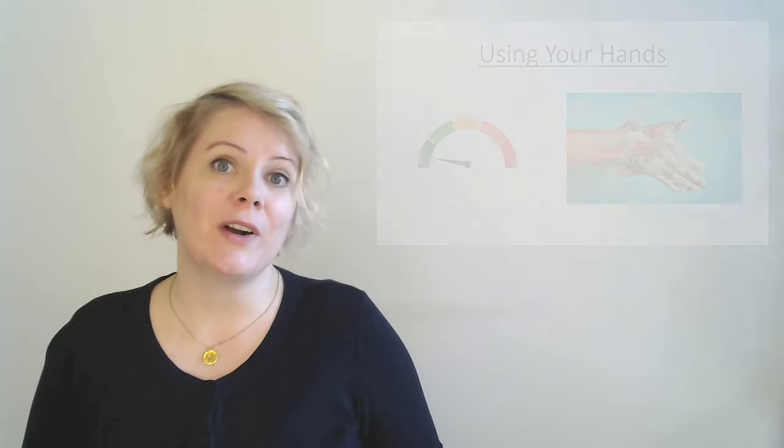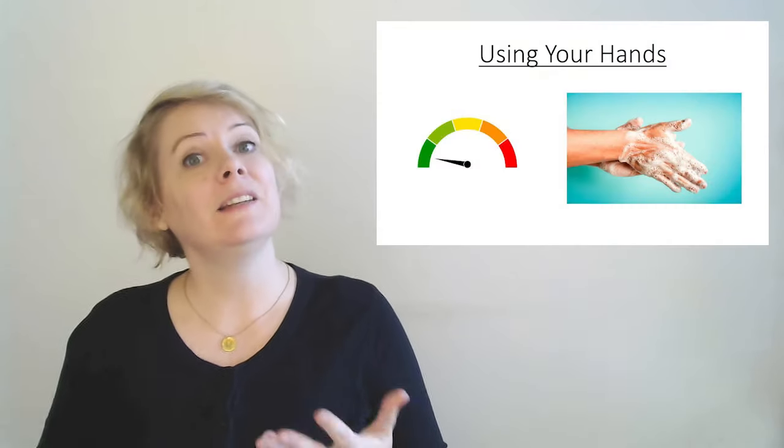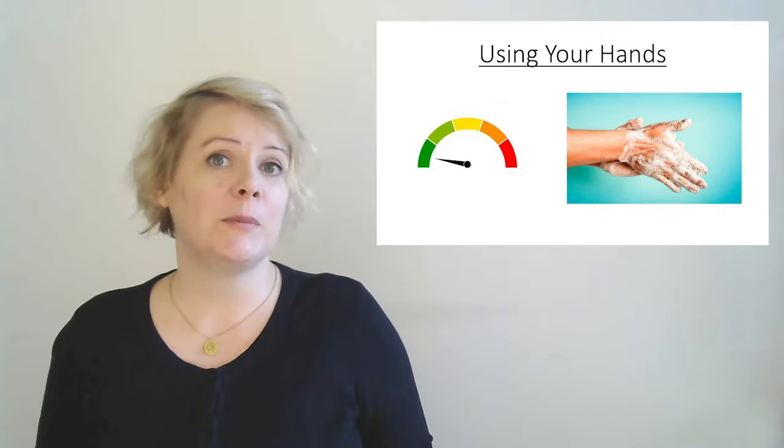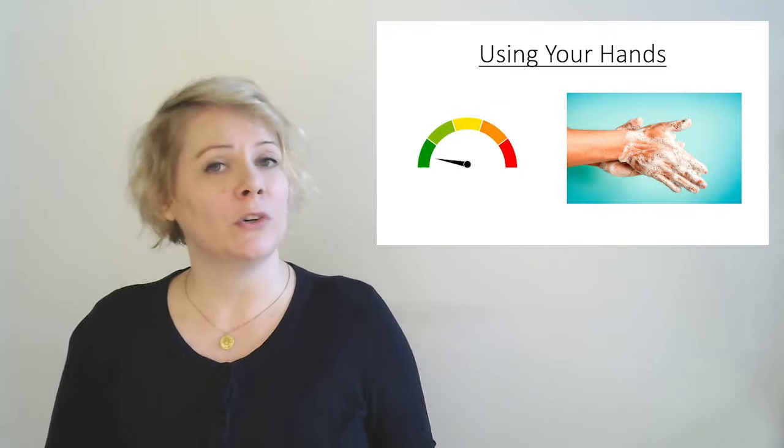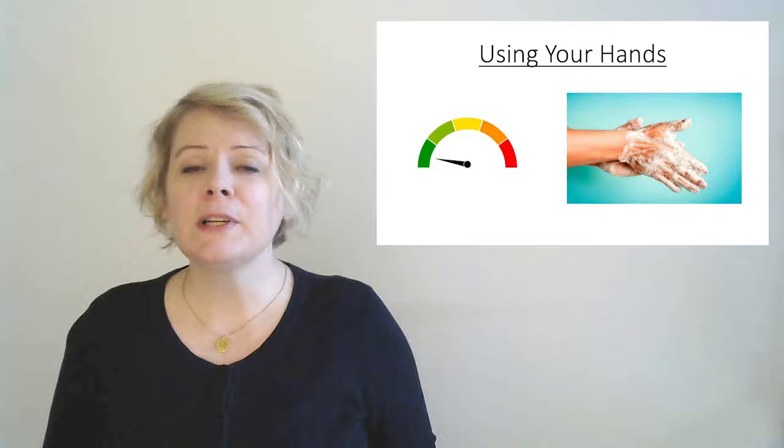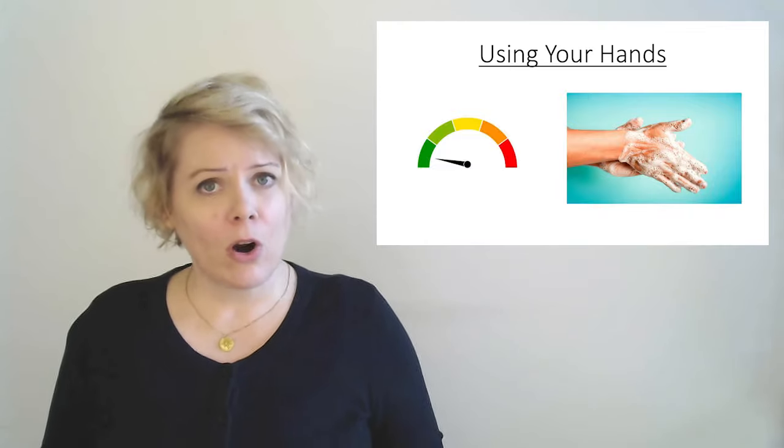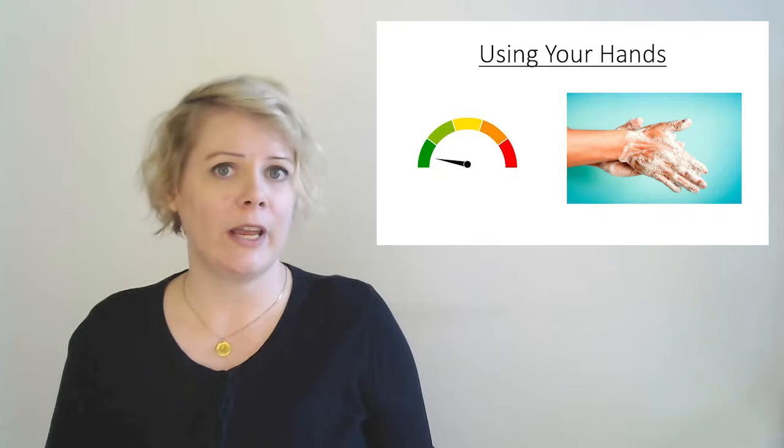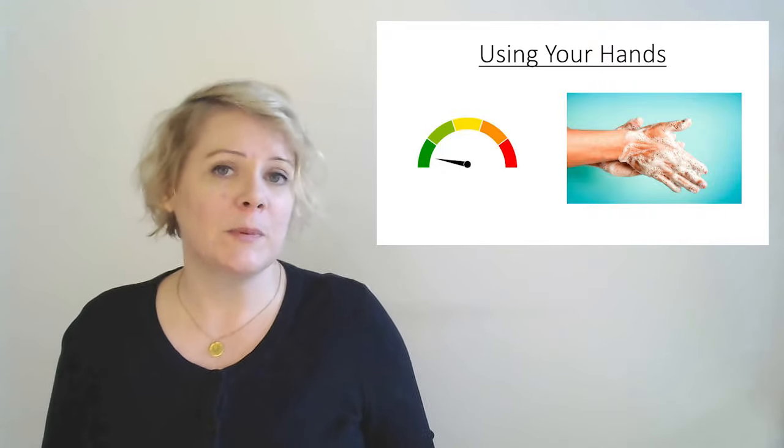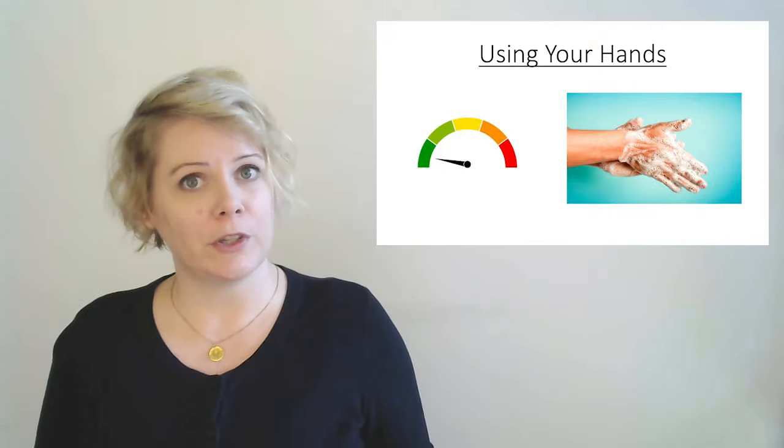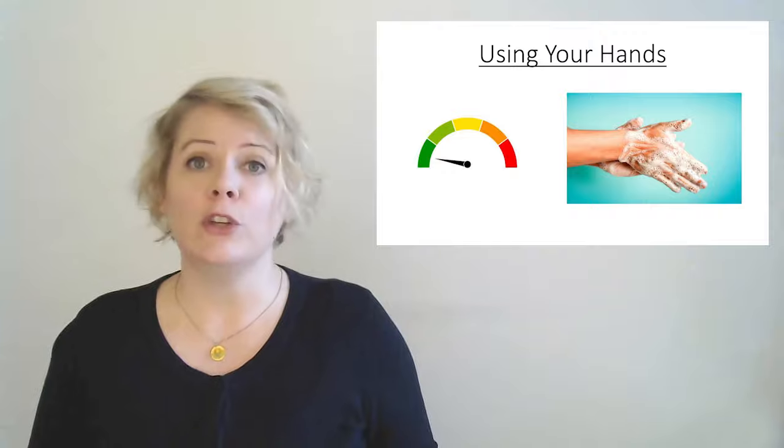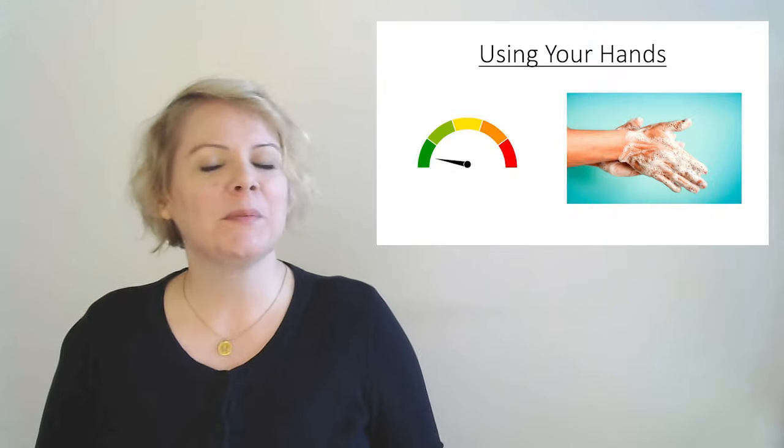The next kind of sexual interaction that people typically partake in is using your hands. So this could be something like fingering someone or giving someone a hand job. And typically, this is pretty safe. There are some diseases that can transfer back and forth just by using your hands. But again, generally speaking, this is one of the safest kinds of sexual interaction. Just remember that you should always wash your hands and you should probably trim your nails.